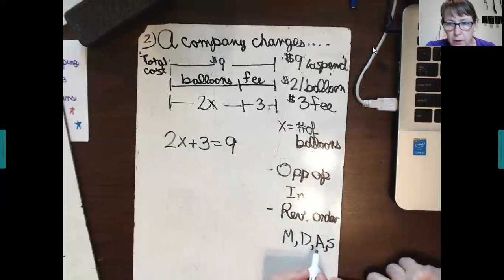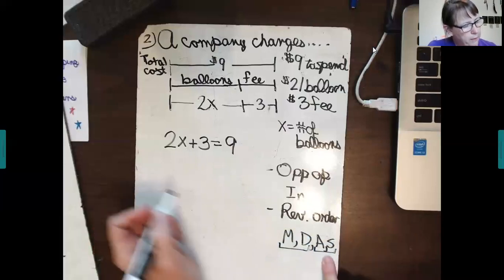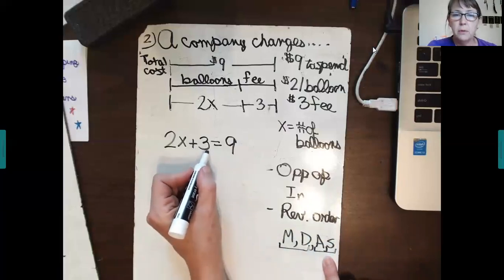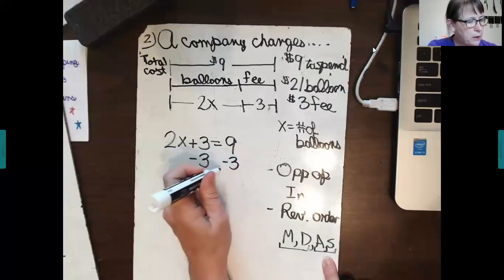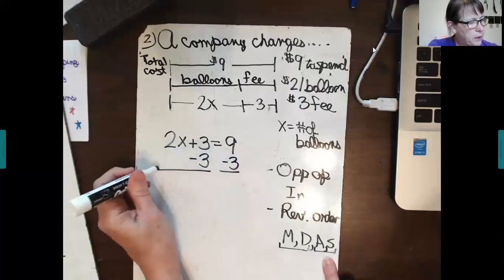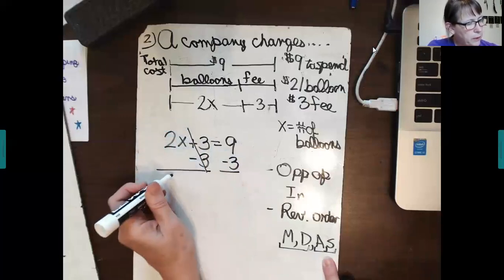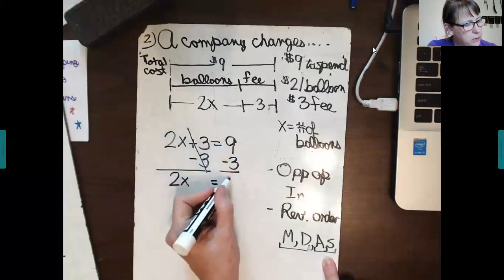So, if you look at, if this means add and subtract from left to right, this means multiply and divide from left to right. Do we have anything being added or subtracted? We sure do. We have a 3 being added. So, what's the opposite of add 3? Subtract 3 to each side. 3 plus 3 minus 3 combined is 0. Then I copy the 2x equals, perform this operation, 9 minus 3 is 6.